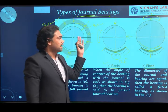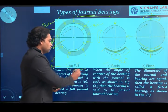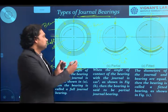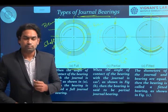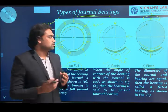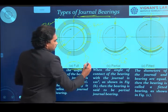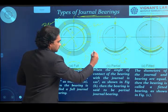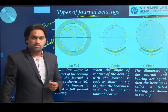That is the classification of journal bearings based on the arc of contact. As per our syllabus, we will go through full journal bearings. The diameter of the shaft is always slightly smaller than the diameter of the bearing — we can consider the bearing diameter as capital D and the journal diameter as small d. The difference (D minus d) gives the diametrical clearance.